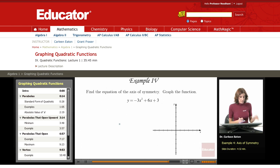This time, we're asked to find the equation of the axis of symmetry and then to graph the function. I'm looking, and this is in standard form, and the equation for the axis of symmetry is defined by the vertical line at x equals negative b over 2a.